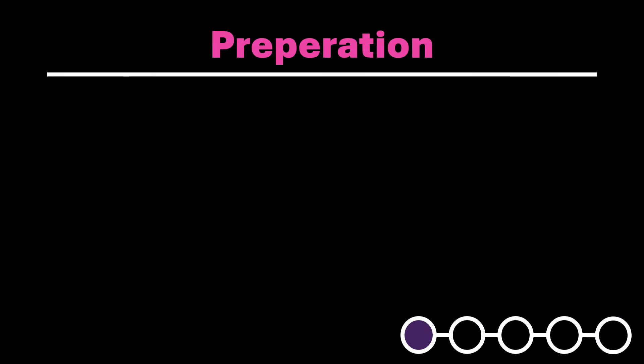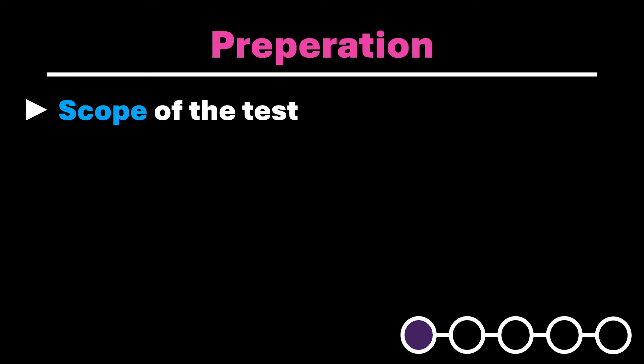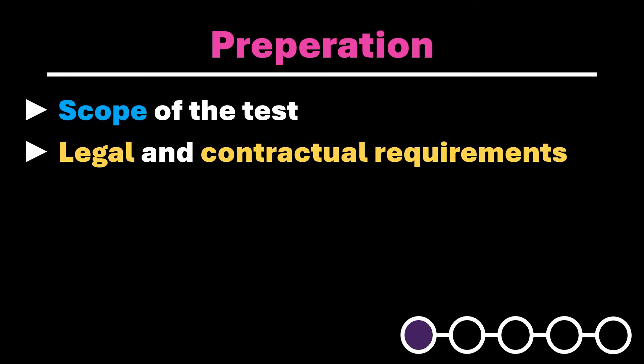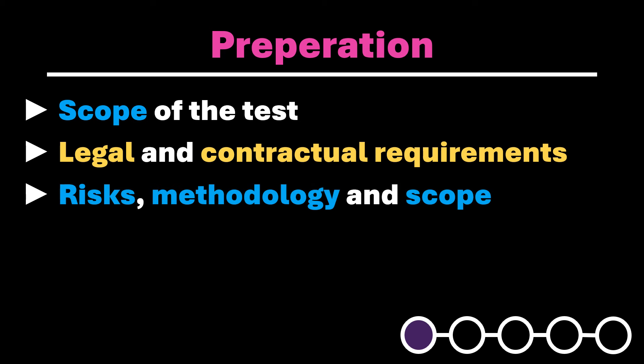Let's start with the first phase, which is crucial for the overall success of the Pentest. In close consultation with the client, the objectives of the test are defined, including the scope of the Pentest. This stage is very important as it directly affects the client's satisfaction, who might otherwise have completely different and sometimes unrealistic expectations. It's also vital to comply with legal and contractual requirements to avoid potential legal repercussions. A detailed plan is developed documenting the potential risks, methodology, and scope. For instance, using unapproved techniques or overlooking risks that cause a production system to fail could lead to the client seeking damages.